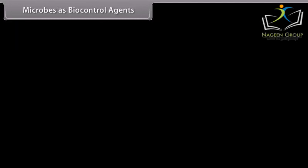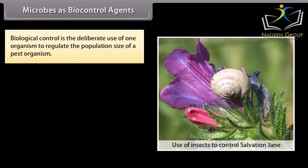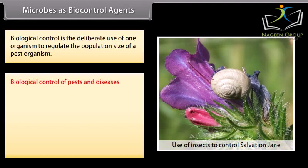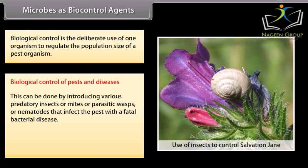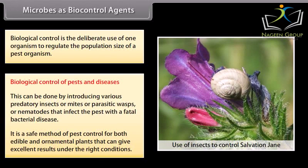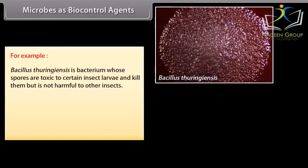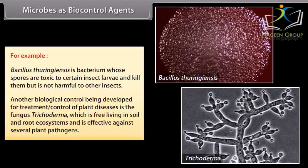Microbes as biocontrol agents. Biological control is the deliberate use of one organism to regulate the population size of a pest organism. This can be done by introducing various predatory insects, mites, parasitic wasps, or nematodes that infect the pest with a fatal bacterial disease. It is a safe method of pest control for both edible and ornamental plants that can give excellent results under the right conditions. For example, Bacillus thuringiensis is a bacterium whose spores are toxic to certain insect larvae and kill them, but are not harmful to other insects. Another biological control being developed is the fungus Trichoderma, which is free-living in soil and root ecosystems and is effective against several plant pathogens.